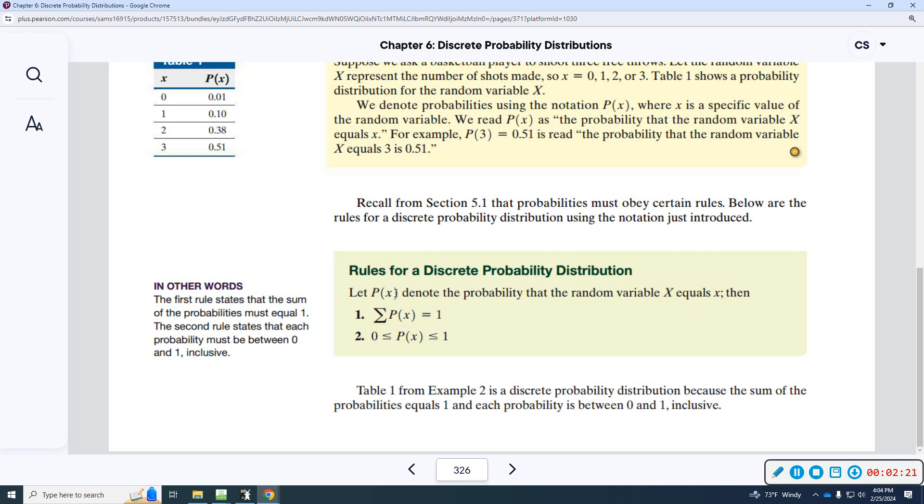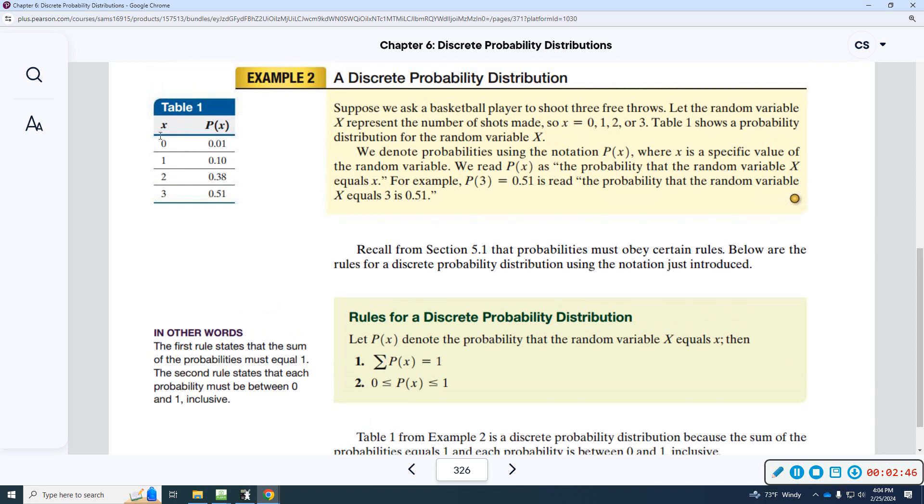P of X is some probability. X is the random variable. Then, if you add up, this is the summation sign, if you add up all the probabilities, it should equal 1. If you look at any particular probability, it should be between 0 and 1. So, you can't have negative. You can't have something that has a higher chance of happening greater than 100%.